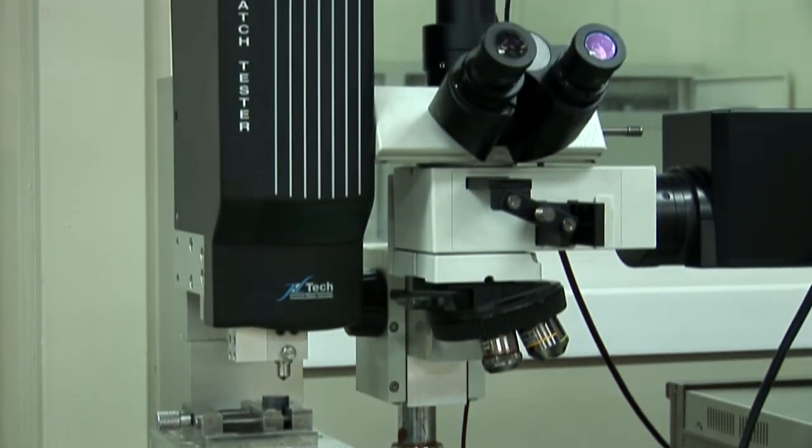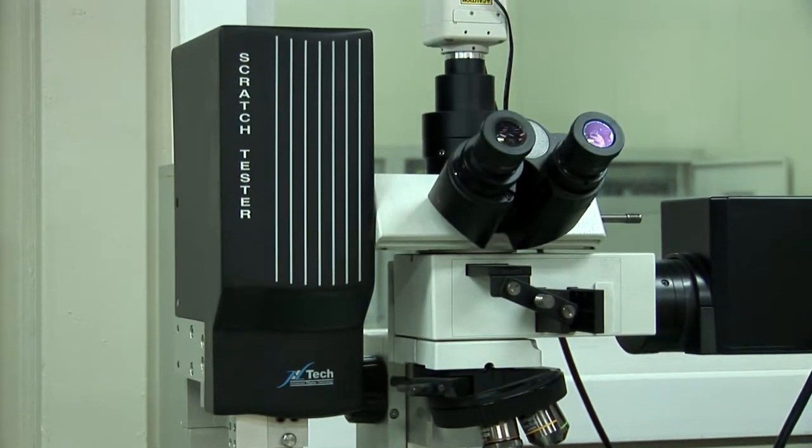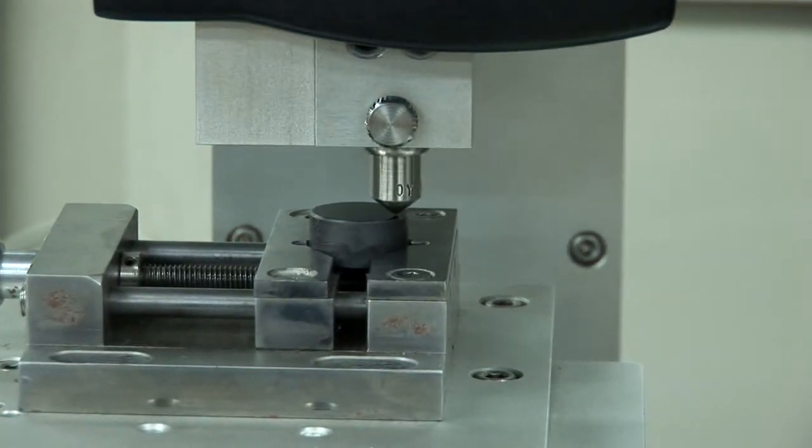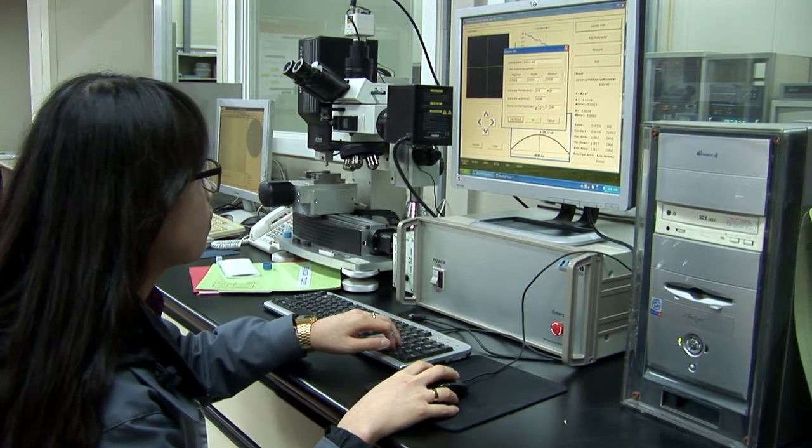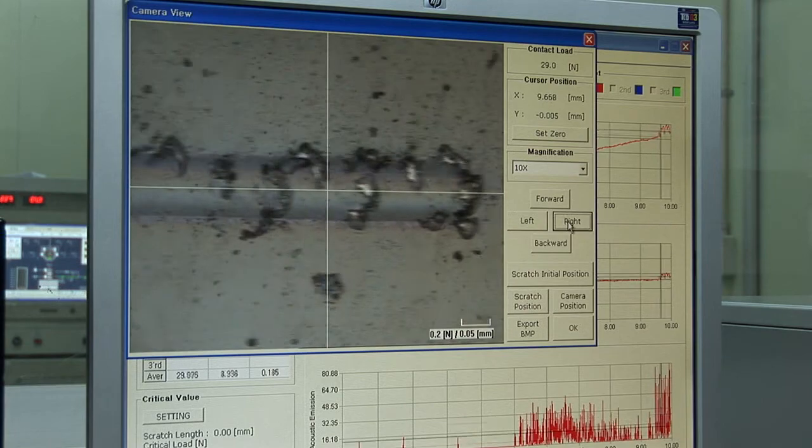The Scratch Tester is an equipment that measures the exact amount of adhesion on the coating thin film of the base metal. It predicts damage of thin film and enables quality control of the coated parts.